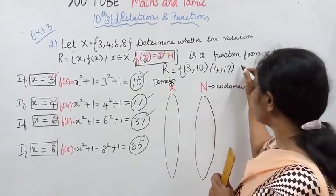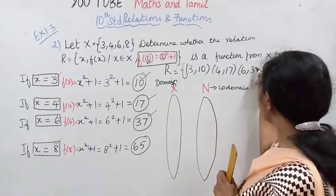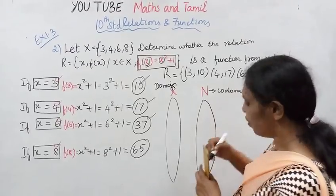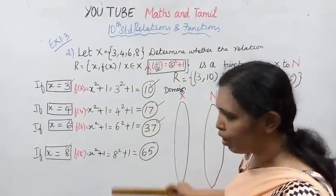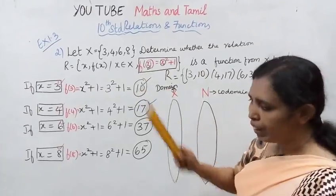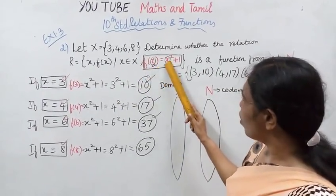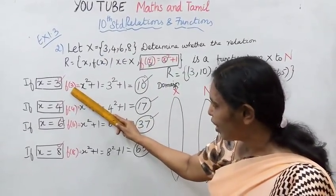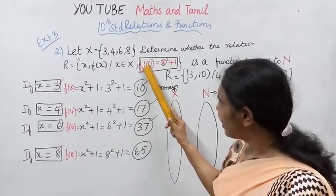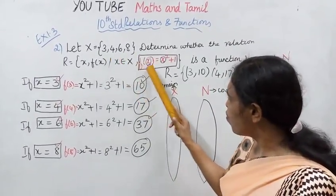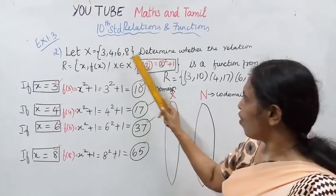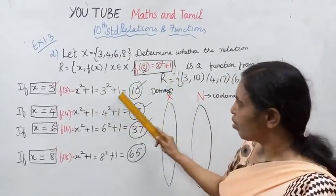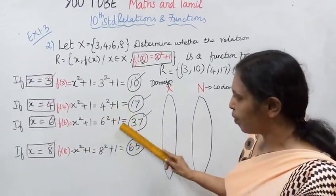So the ordered pairs are (3,10), (4,17), (6,37), (8,65). Now we have the relation. f(x) = x² + 1. For each x in X, f(3) = 3²+1, f(4) = 4²+1, f(6) = 6²+1, f(8) = 8²+1.